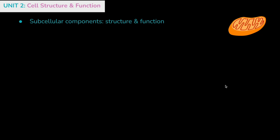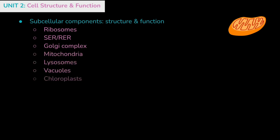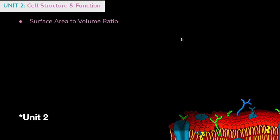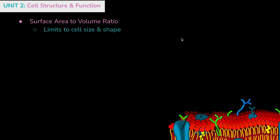When we get to Unit 2, a lot of these concepts might be familiar from another biology class. You'll be going over cell structure, different organelles, differences between plant and animal cells and prokaryotic and eukaryotic cells. Make sure you're very comfortable with these organelles: ribosomes, smooth and rough endoplasmic reticulum, the Golgi complex, mitochondria, lysosomes, vacuoles, and chloroplasts — including the thylakoids in the grana and the stroma section. Unit 2 also includes surface area to volume ratio and how this limits cell size, and how complex structures have evolved to increase exchange of materials. Think of folds along the inner mitochondrial membrane, the gyri and sulci of the brain, or microvilli in the intestines — all there to increase surface area.